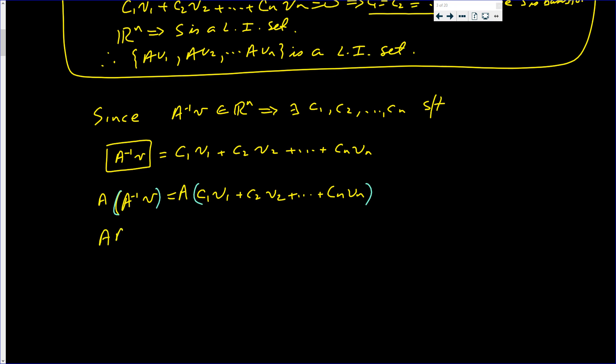So, now I have A(A^(-1)V) is equal to, distributing the A, A times C1v1, plus A times C2v2, all the way down to A times Cnvn. Now, this is the identity times V. This is equal to C1 times Av1, plus C2 times Av2, all the way down to Cn times Avn. And I times V is just V.